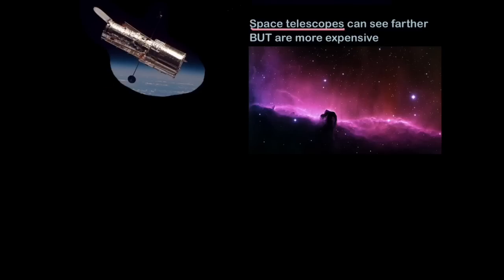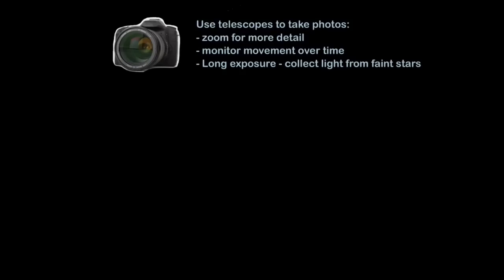Then there are space telescopes like the Hubble Space Telescope and these can see farther but they are more expensive. But look at the pictures we can get with them. This is the Horsehead Nebula. This is a star nursery where stars are born. Each speck of light here is a new star being born. They are some of the most beautiful and simultaneously violent places in the universe. And now we can fit telescopes with cameras, so we can use telescopes to take photos.